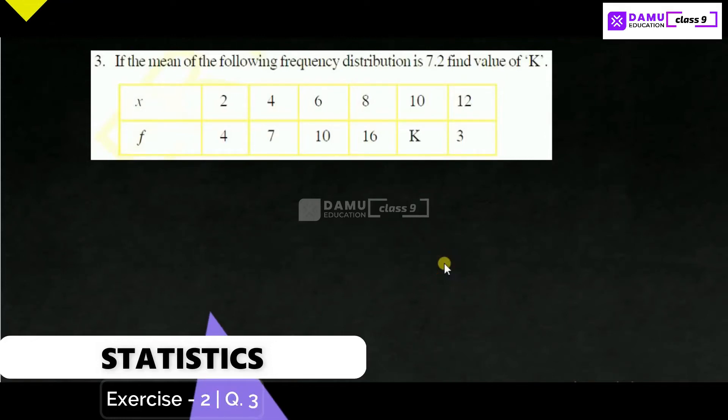Hello viewers. In this module, we are going to discuss our third problem. If the mean of the following frequency distribution is 7.2, find the value of k.